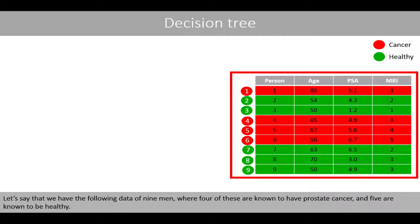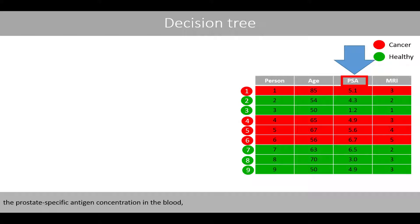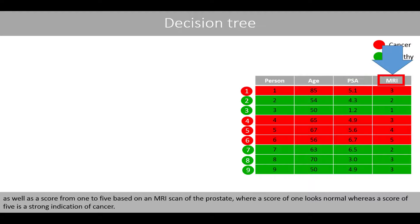Let's say that we have the following data of nine men, where four of these are known to have prostate cancer and five are known to be healthy. For each person, we have information about the age, the prostate-specific antigen concentration in the blood, as well as a score from one to five based on an MRI scan of the prostate, where a score of one looks normal, whereas a score of five is a strong indication of cancer.